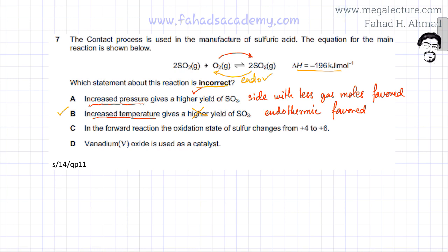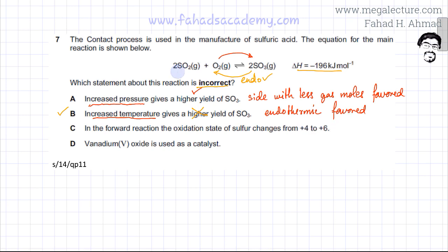Just to confirm option B, let's look at option C. In the forward reaction, the oxidation state of sulfur changes from plus 4 to plus 6. In SO2, there are two oxygens each at minus 2, so sulfur is plus 4. In SO3, there are three oxygens each at minus 2 (totaling minus 6), so sulfur is plus 6. This statement is correct.